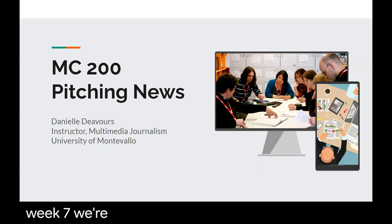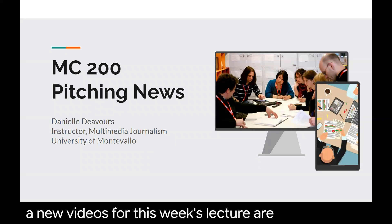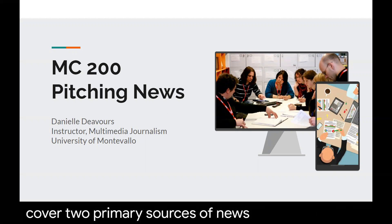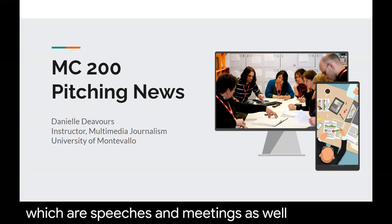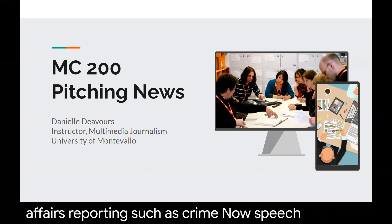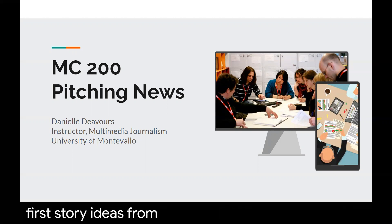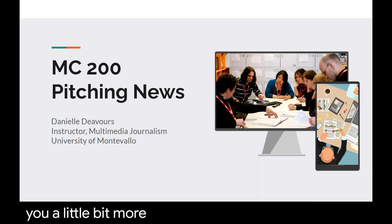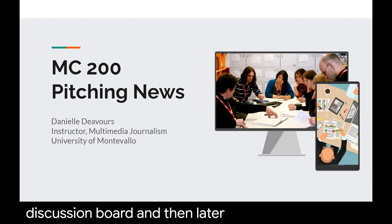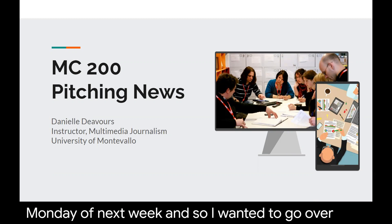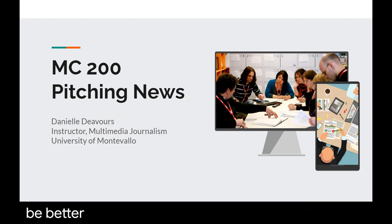For week seven, we're going to be talking about how you pitch a news story. The videos for this week's lecture are going to cover two primary sources of news for journalists, which are speeches and meetings, as well as public affairs reporting such as crime. Speeches and meetings are where I expect you to get your first story ideas from. You're going to have an assignment first in your discussion board, and then later a final pitch due on Monday of next week.